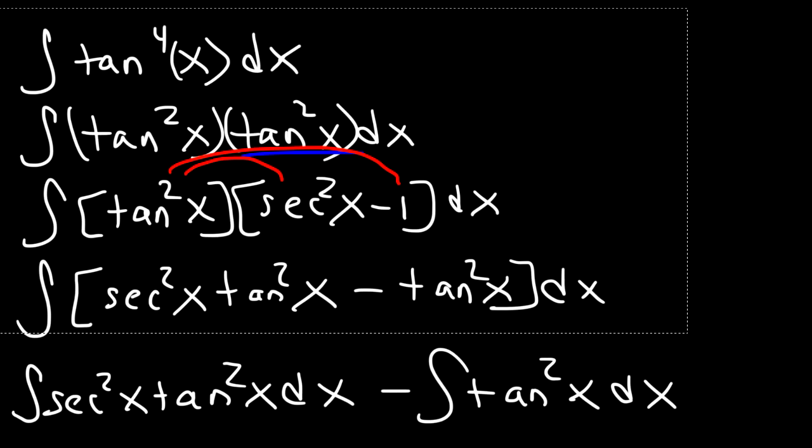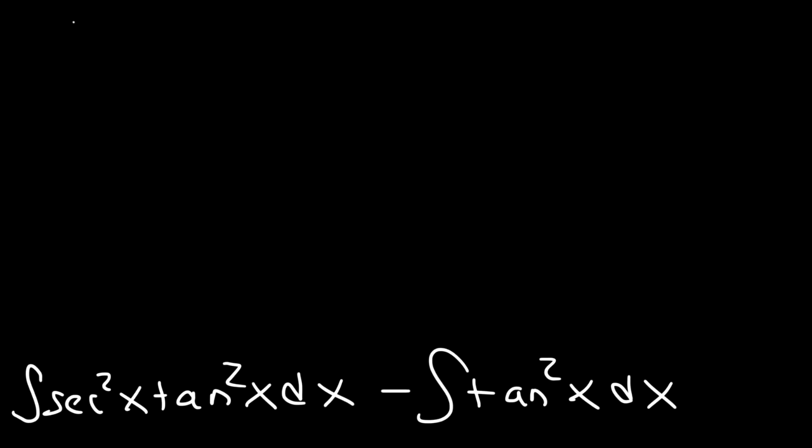Now let's focus on the first integral. How can we integrate secant squared times tangent squared? Notice that the derivative of tangent is secant squared, so we can use u substitution.